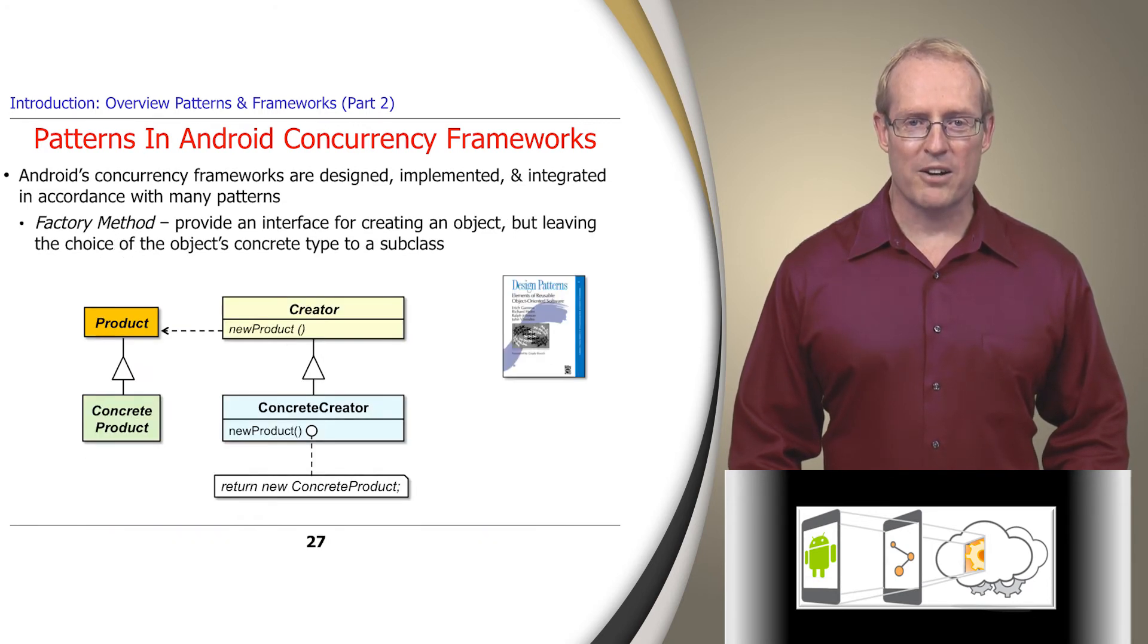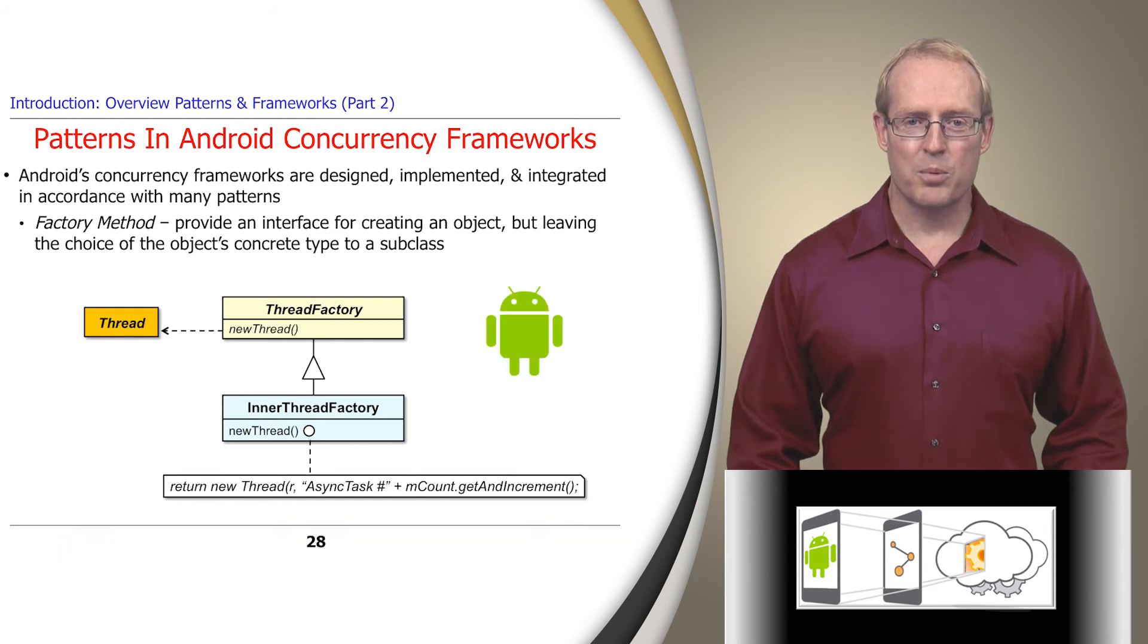The factory method pattern provides an interface for creating an object, but leaves a choice of the object's concrete type to a subclass. The ThreadPoolExecutor class in the Android AsyncTask framework applies this pattern to designate the subclass of ThreadFactory used to create a thread, whose name encodes the unique async task number, which serves as a debugging aid, as shown in this upcoming video.